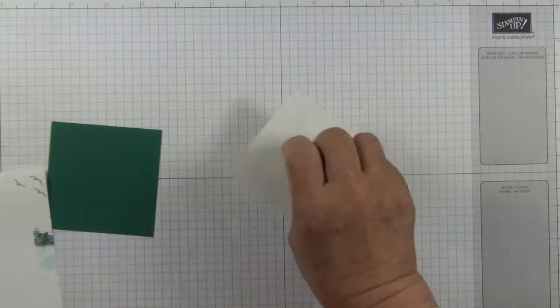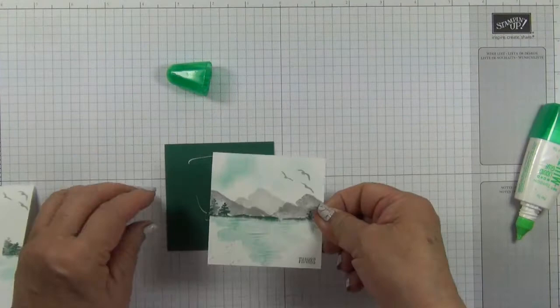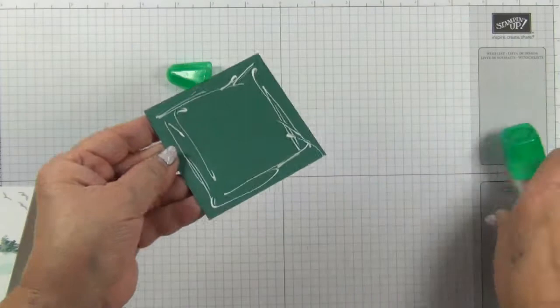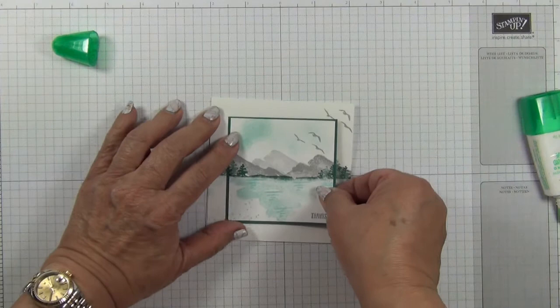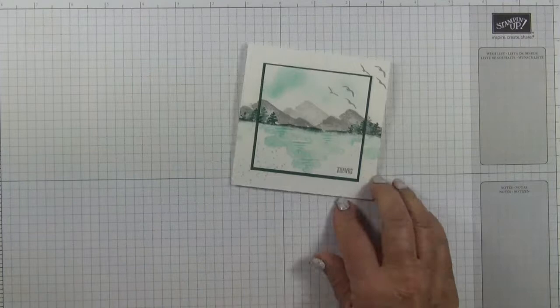So next you carefully peel this off, adhere it to the tranquil tide layer. Then adhere the tranquil tide layer to the card front. And make sure that you marry up the markers so it looks like one continuous picture.